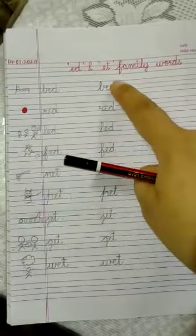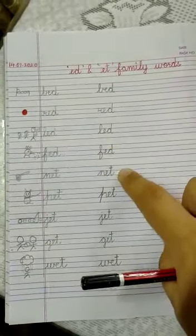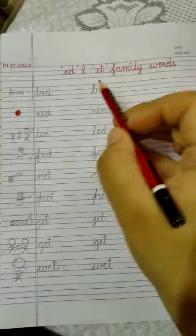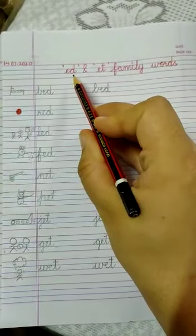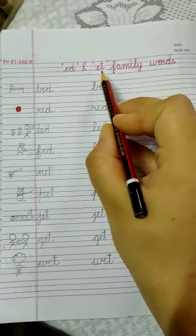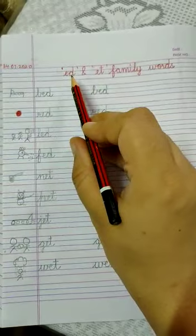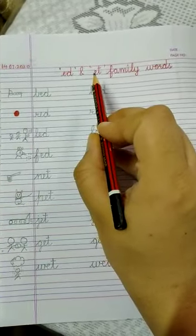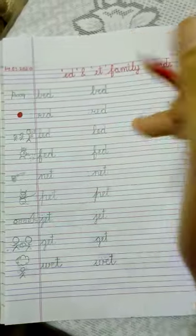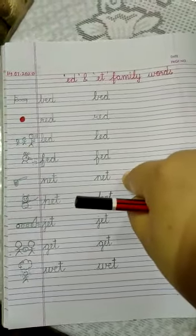So these are 'ed' family words and these are 'et' family words. Okay — 'ed' and 'et'. So you have to learn how to read these words. Okay?